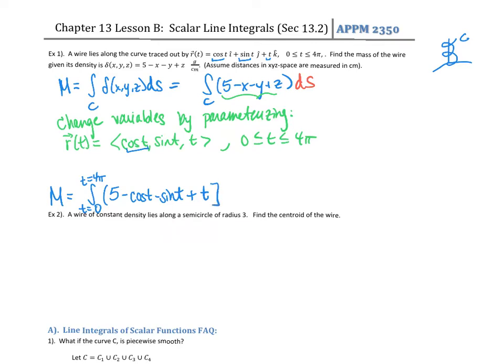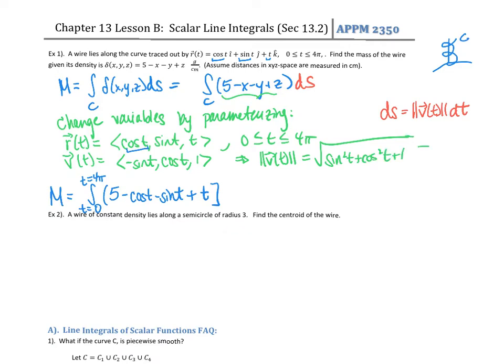And then I need to replace ds. So recall, a tiny little distance is going to be my speed times my time. So I need to figure out what speed is. I'm going to take the magnitude of this velocity, which is giving me square root of sine squared plus cosine squared plus one. And these two combined will give me one, so this is going to give me square root of two.